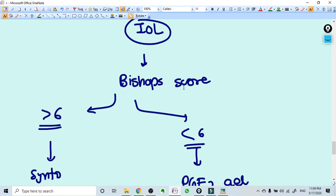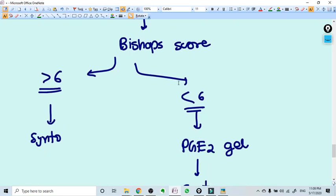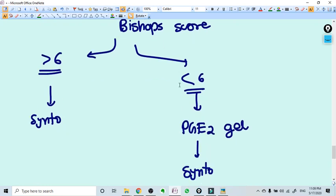Induction of labor is done as soon as possible. Just like any other induction, you see the Bishop score. If it is more than six, you start syntocin directly to induce the uterine contractions.